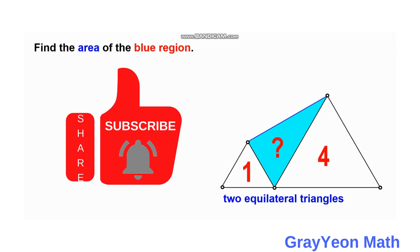Welcome to GrayYeon Math. In this problem, we have two equilateral triangles with their points on the base, like a horizontal line. The areas are given: 4 square units and 1 square unit.